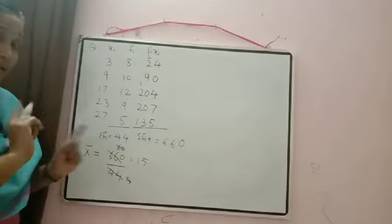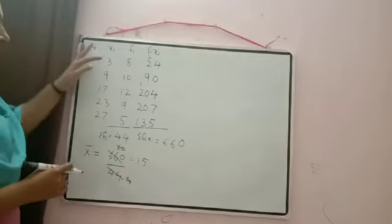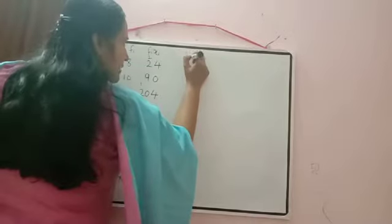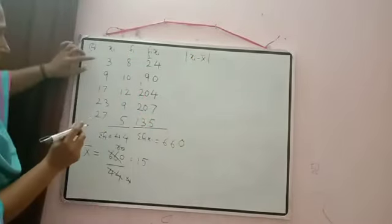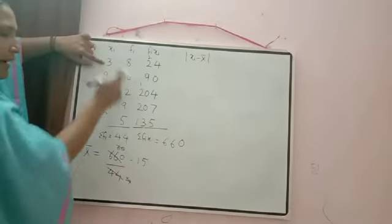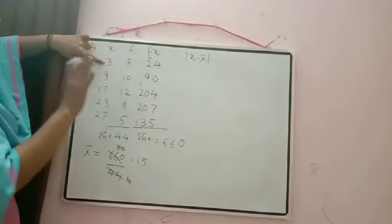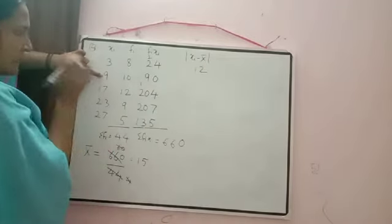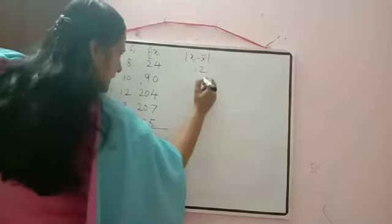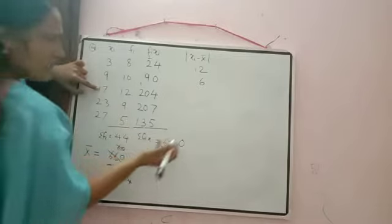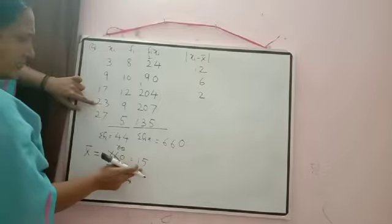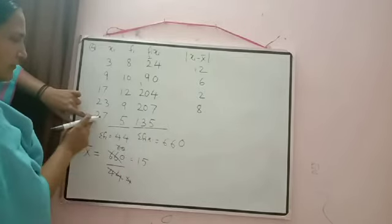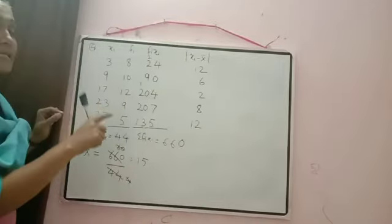Now we need the deviation. The original observations are xᵢ; frequency gives how many times each is repeated. Next column: |xᵢ − x̄| where x̄=15. Keep your hand on xᵢ column. Computing: |3−15|=12, |9−15|=6, |17−15|=2, |23−15|=8, |27−15|=12.